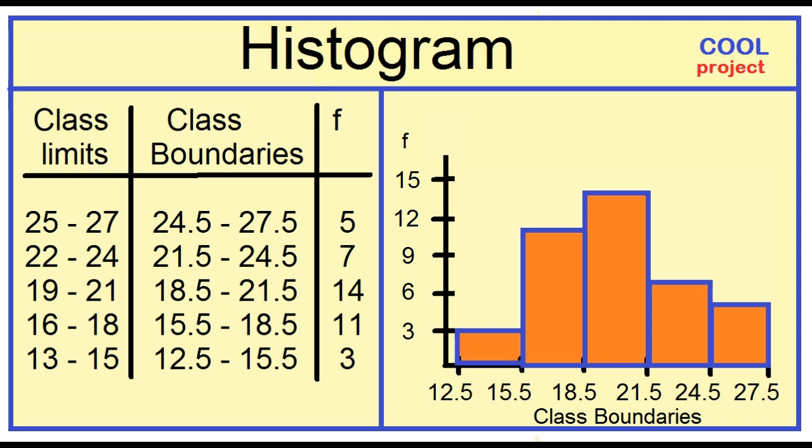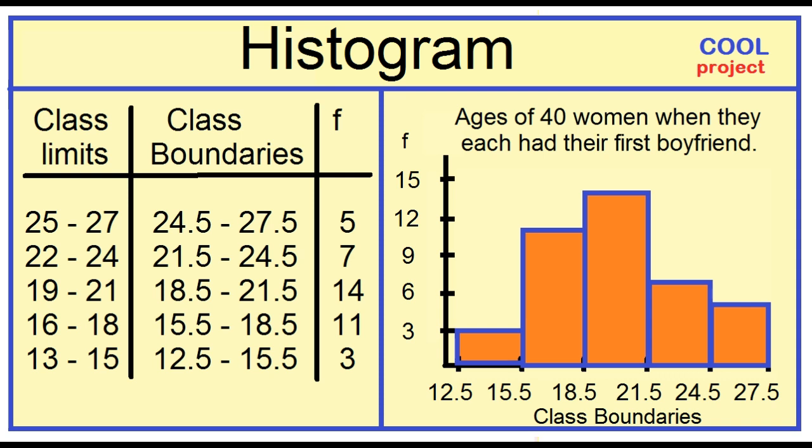This is the histogram for the ages of 40 women when they each had their first boyfriend. What is a histogram? A histogram is a graph that displays the data by using vertical bars to represent the frequencies.